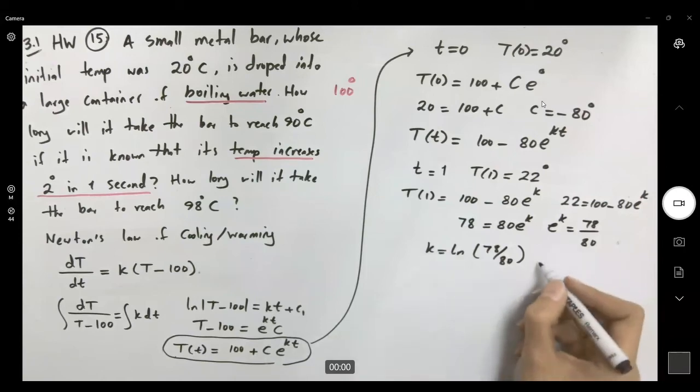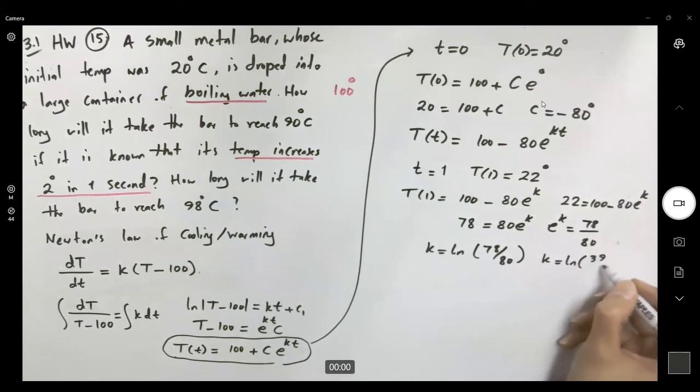We can simplify this. Your k becomes ln of 39 over 40. So we found k.